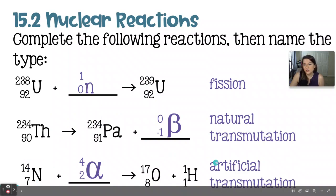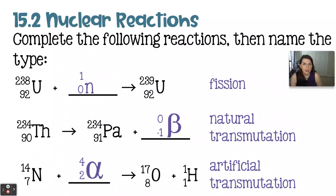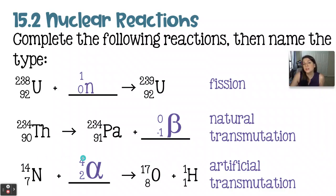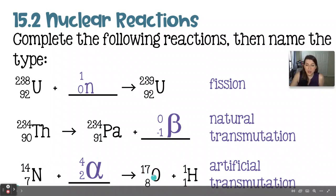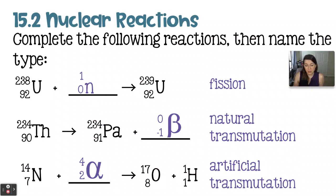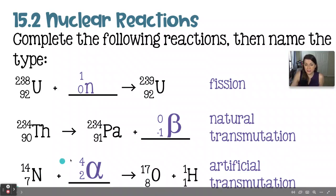This next example is an artificial transmutation. We have nitrogen with a mass number of 14 and atomic number of 7 transforming into a new element — it is making oxygen. The mass number is 17 plus the one on the hydrogen, which pops out as a byproduct, so the total across the top must be 18. So 14 plus the 4 on the alpha particle gives 18 across the top on both sides. We need 9 on the bottom because we have 8 in the oxygen and 1 in the hydrogen. On the reactant side it will be 7 and 2, making this an artificial transmutation.